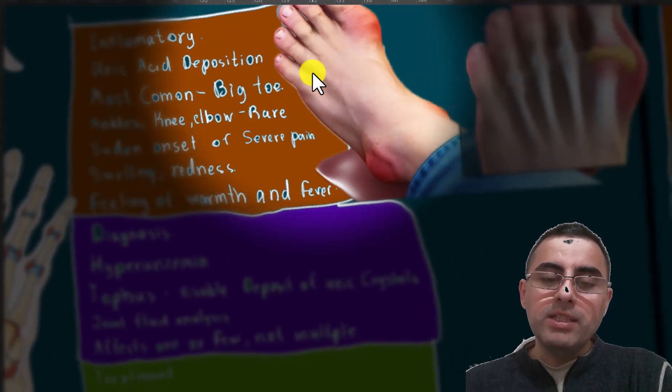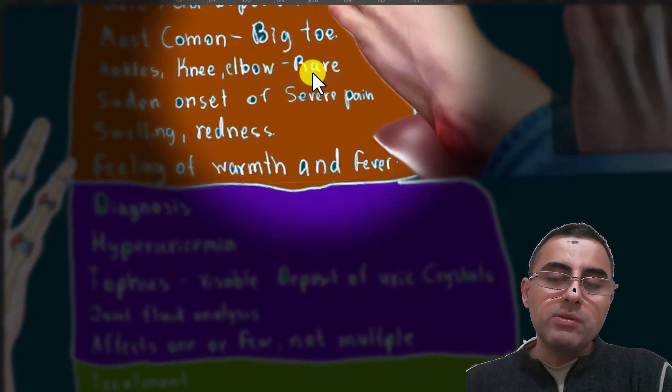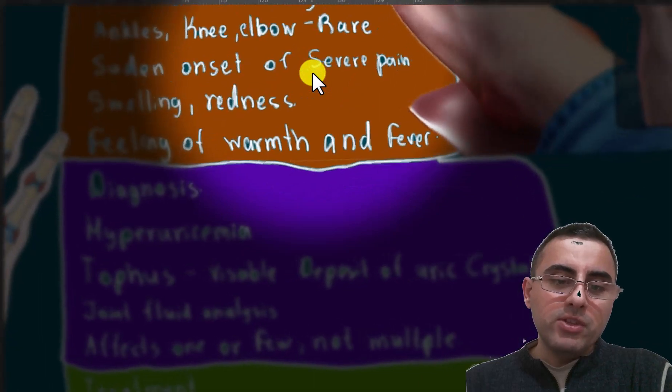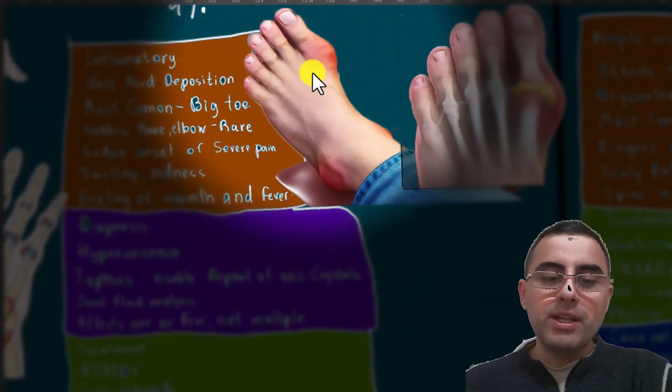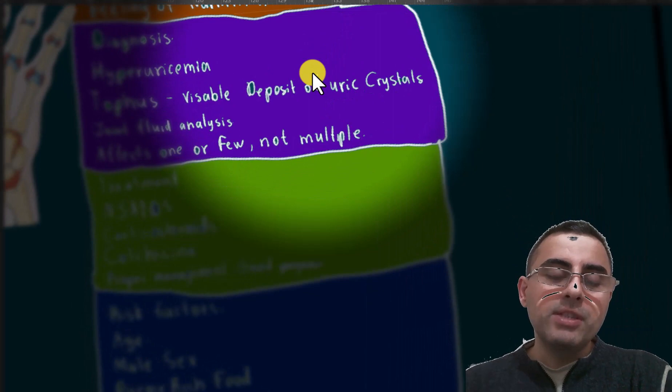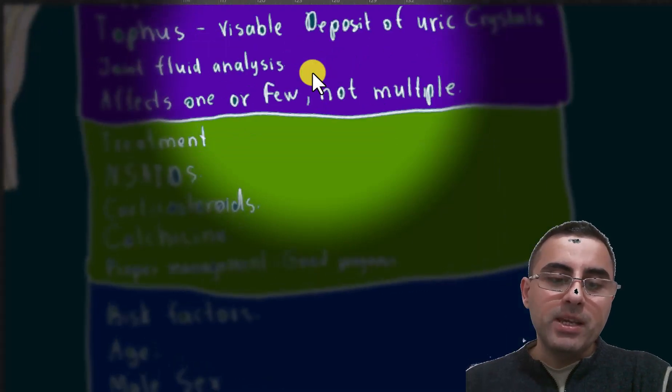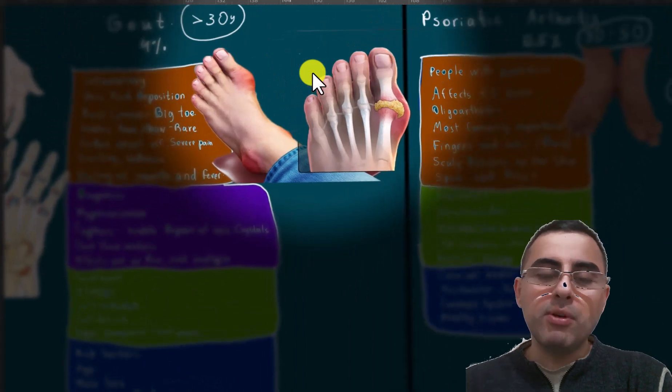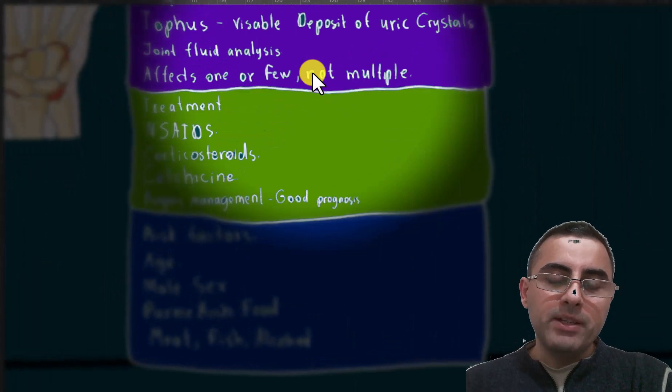Tophus means the deposition of uric crystals on joints. To confirm diagnosis, joint fluid analysis can be made. Usually it affects one joint or several joints, not multiple joints. Treatment is non-steroidal anti-inflammatory drugs, corticosteroids, and colchicine. When properly managed, it usually has good prognosis.